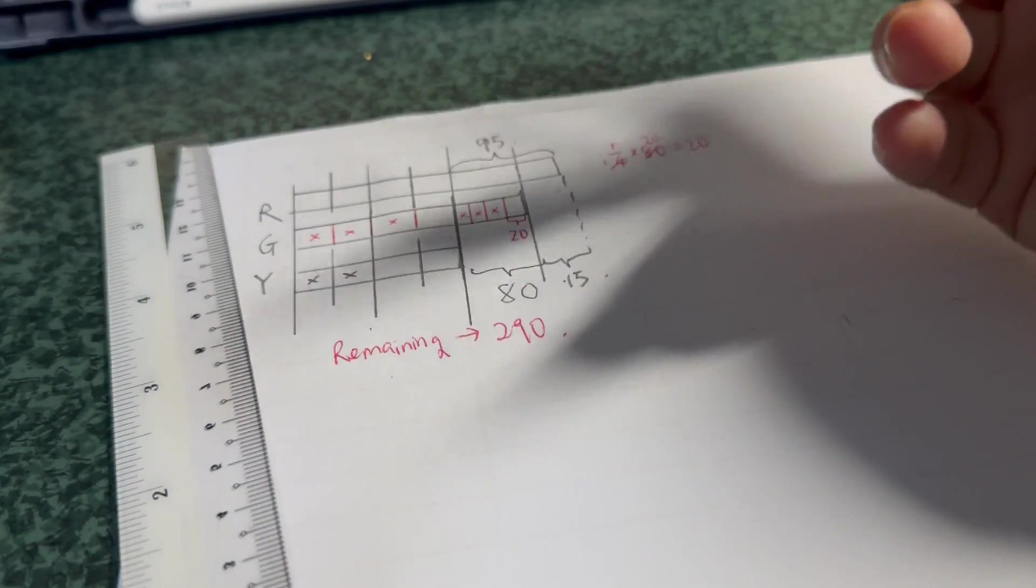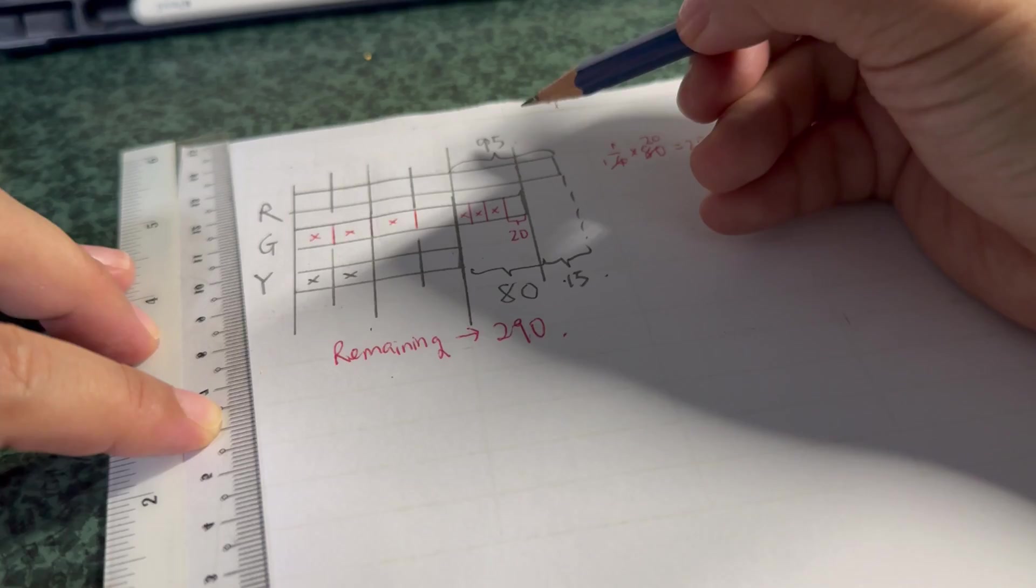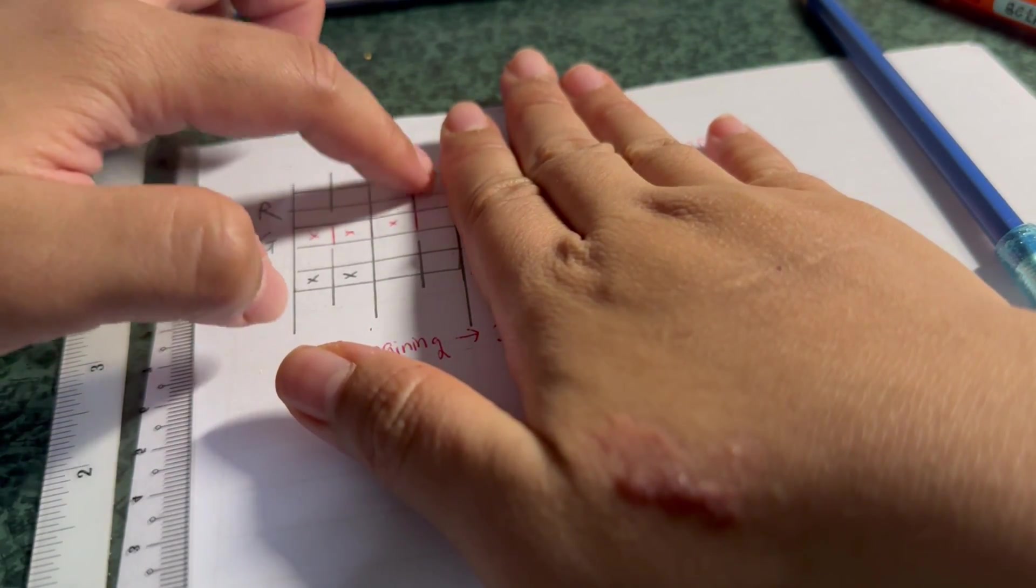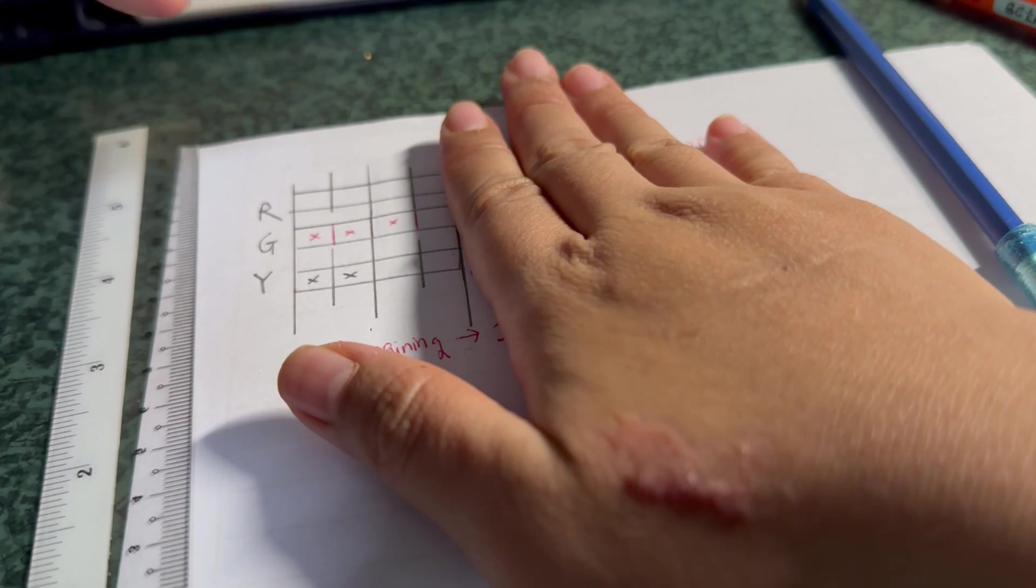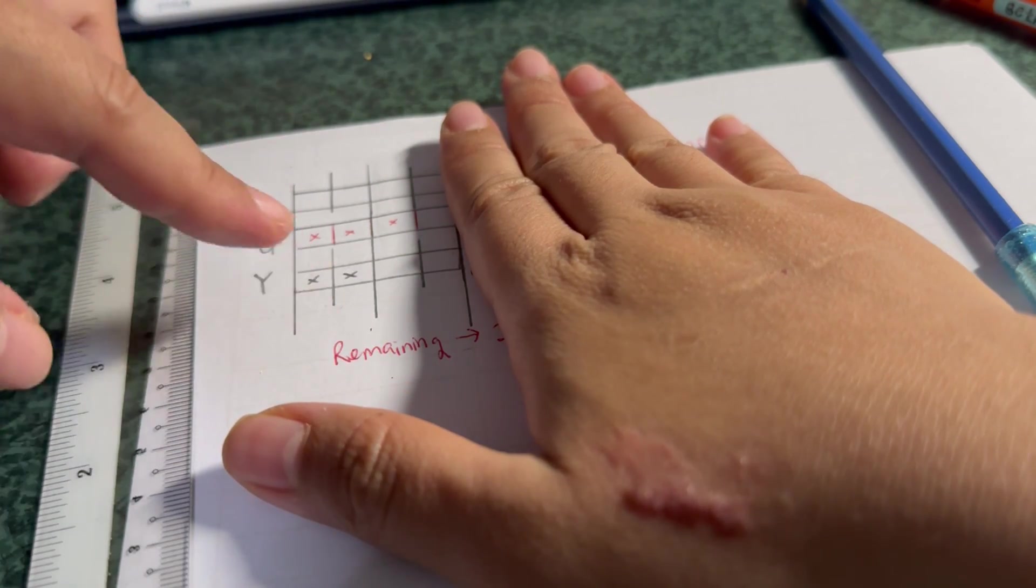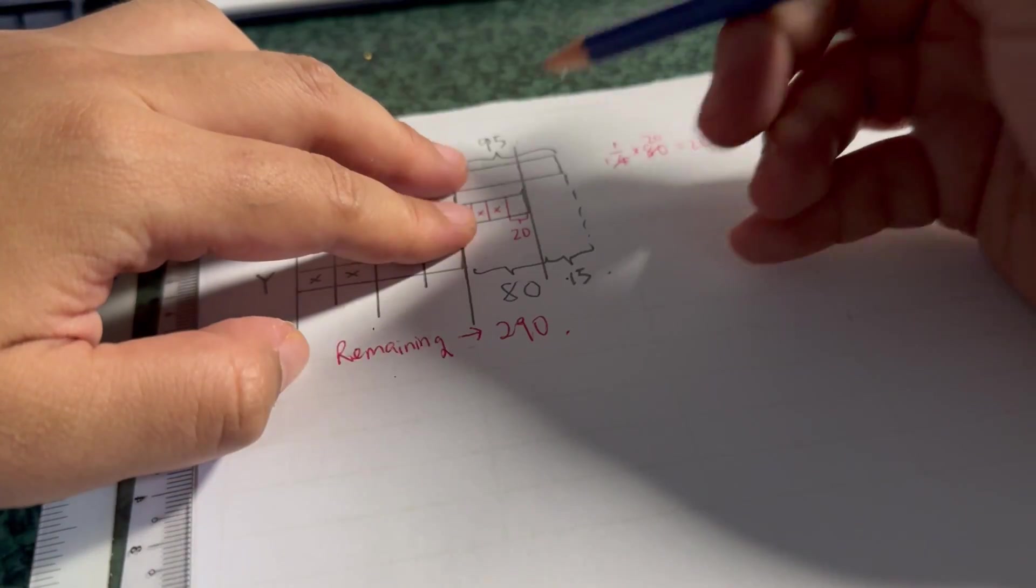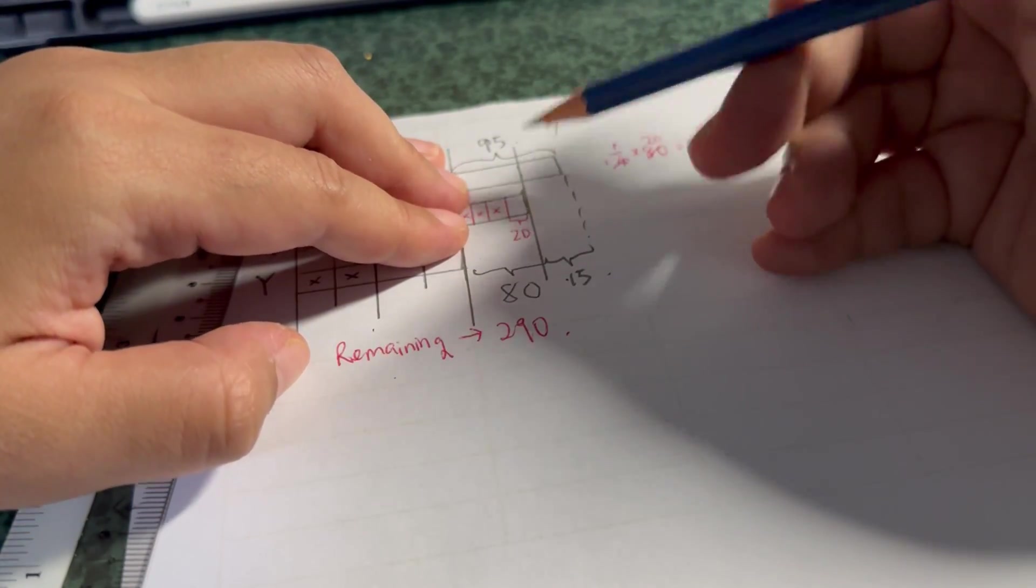290 is equals to how many units? But before I could do that, you see there are one, two, three, four, five, six, seven units, right? So I can equate that into seven units, but before I do so, I have to take away these excess parts, which is 90 and 20.